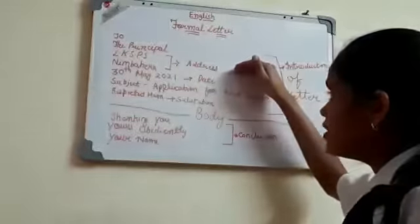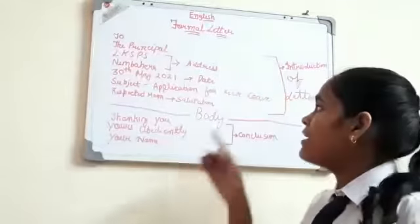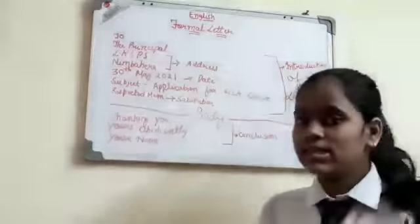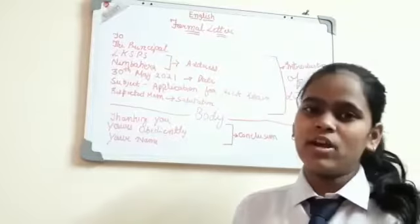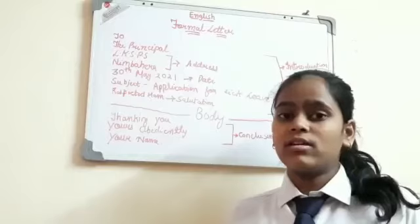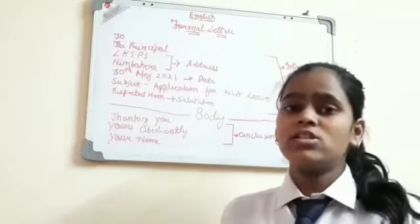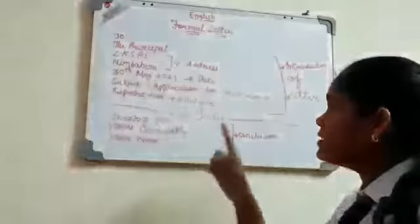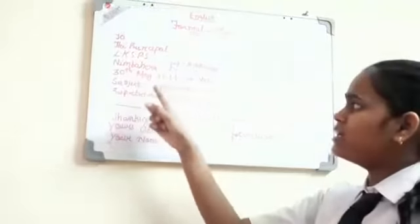Then after the address, you have to leave one line and then write the date, like 30th May 2021. You are not supposed to write the date like 3/5/21. This is wrong. You always have to write the date in full, like 30th May 2021.